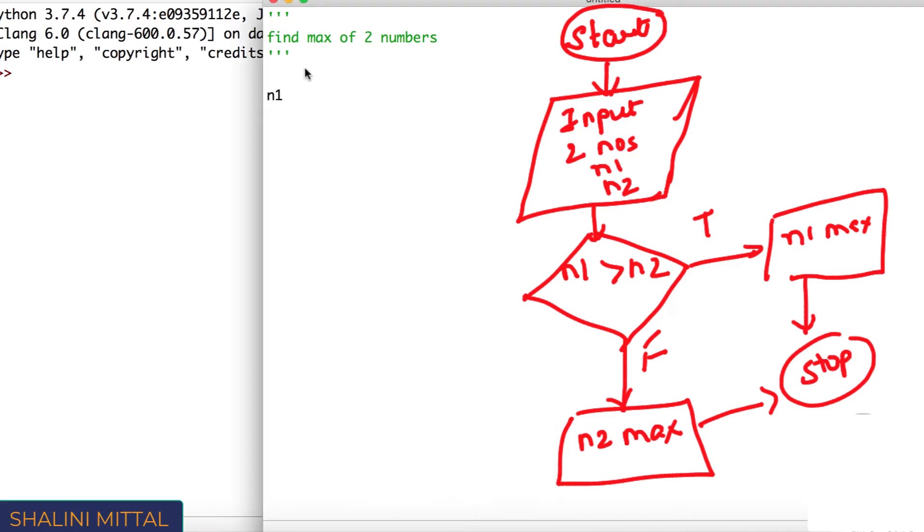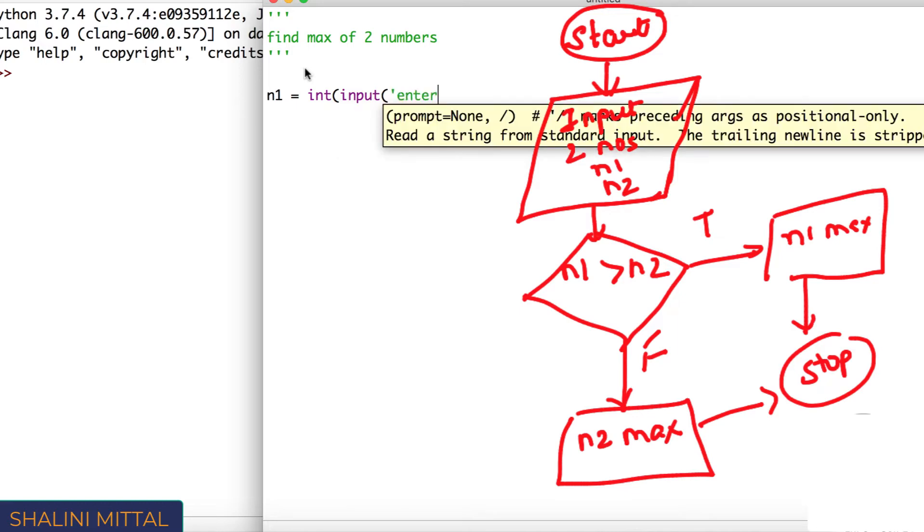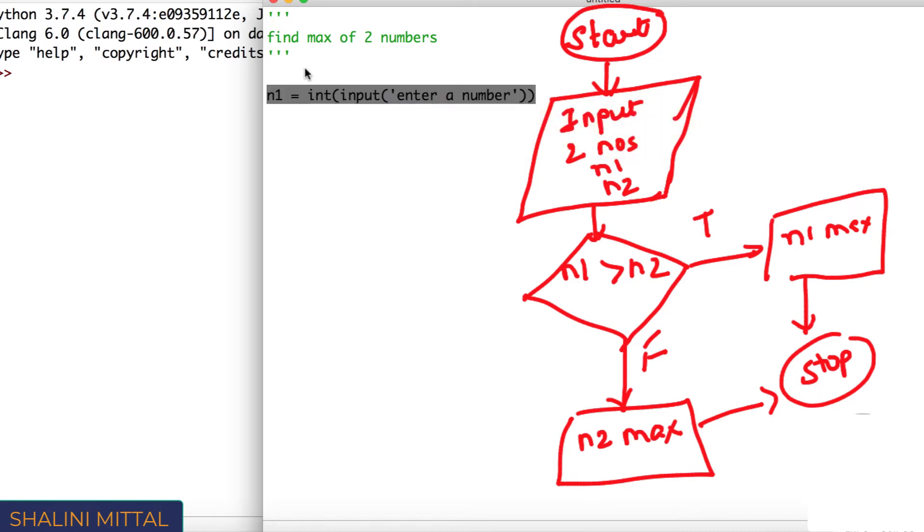If I try to implement the same in Python, how you would be doing? Again, n1 is equals to, because as we discussed, we require two variables. So I'll say input, enter a number. Same way I'll say n2, input, say first number and input second number. Now if, so I've input the two numbers, n1, n2, the condition needs to be checked.